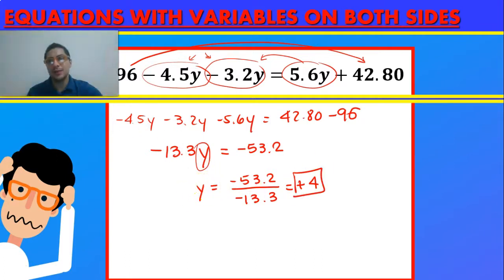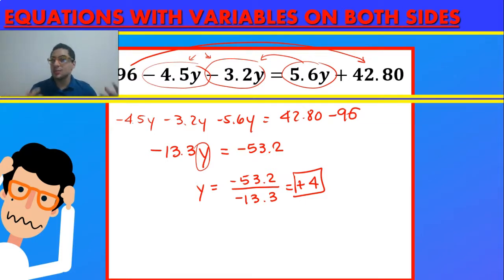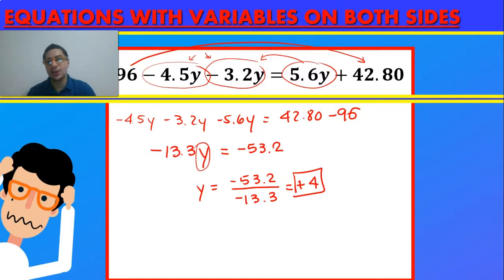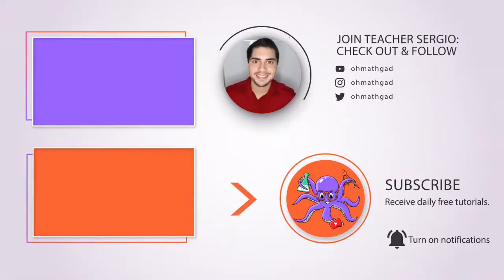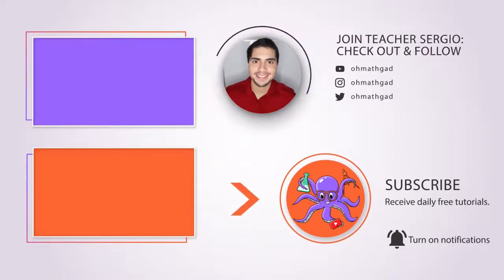And that's how you solve equations with variables on both sides. Make sure you move every number to one side and everything with a variable to the other side, then simplify. If something is under the variable it is dividing it, so it passes to the other side multiplying, and if something is multiplying the variable it passes dividing. Feel free to redo these problems — practice is very important. Check out other videos to improve your math skills, subscribe to make the community grow, follow OmathGod on social media, and drop a like and comment below. See you on the next one!